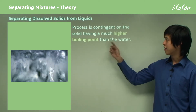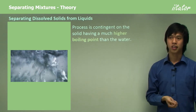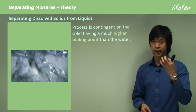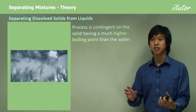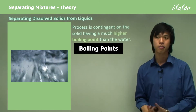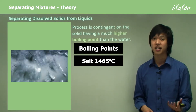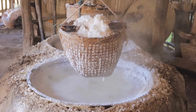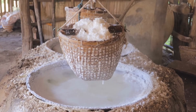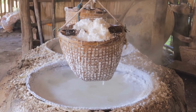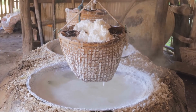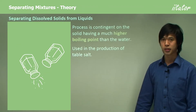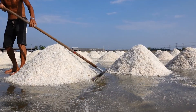The process is contingent on the solid having a much higher boiling point than the water. The property we're exploiting is that the dissolved solid has a really high boiling point compared to the liquid it's dissolved in. For instance, salt has a boiling point of around 1,000°C whereas water is 100°C — a big difference. Because we can't boil the solid, we can boil the water and it will go away, leaving behind just solid salt. This is used in the production of table salt — seawater is evaporated, leaving the salt behind.